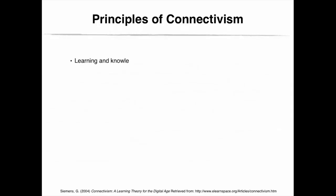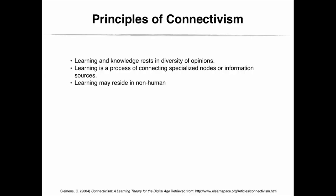These are the principles of connectivism. Learning and knowledge rests in a diversity of opinion. What do you think that means? How do we get there? Learning is a process of connecting specialized nodes of information sources. How do we do this? Learning may reside in non-human appliances. Now I must wonder, what are non-human appliances? Do you have an answer to this?